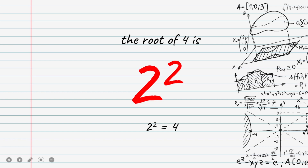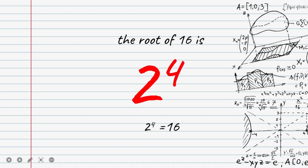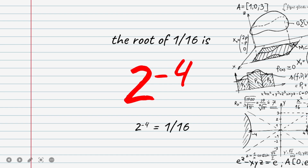For example: 4 squared equals 16. Also, 4 squared equals 16. In the case where we have 1 over 16, that is equal to 4 to the power of minus 2, because a negative exponent moves the base to the denominator. Therefore, 1 over 16 equals 4 to the power of minus 4.